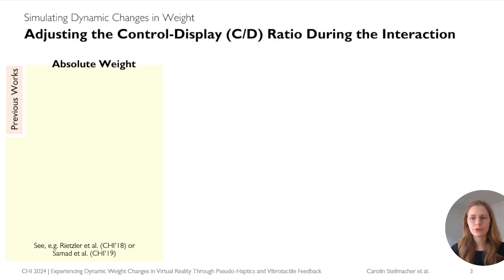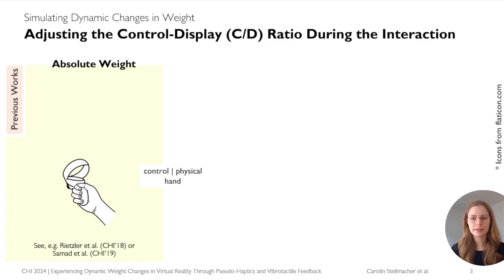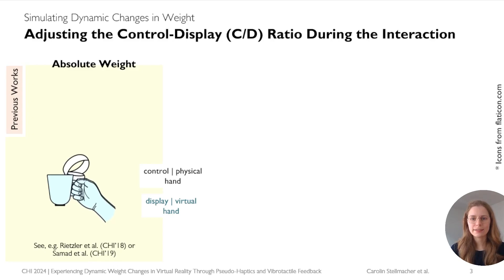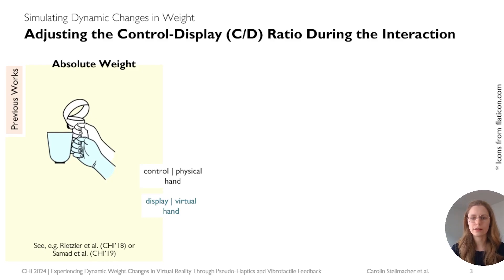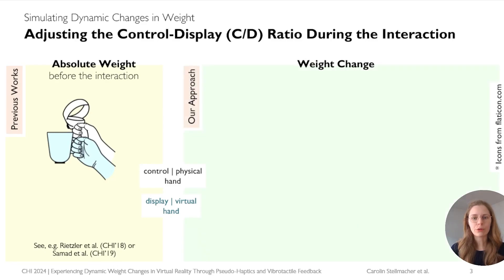The known method for simulating virtual weight is increasing or decreasing the control-display ratio — the CD ratio — between the control hand (the physical hand) and the display hand (the virtual hand in VR). The result is a displacement between both hands, an effect you may have encountered when adjusting mouse cursor speed on your laptop. For simulating absolute weights in VR, this manipulation of the CD ratio is done before the interaction and either amplifies or compresses the arm movement when lifting the object. In our novel approach, we manipulate the CD ratio during the interaction.